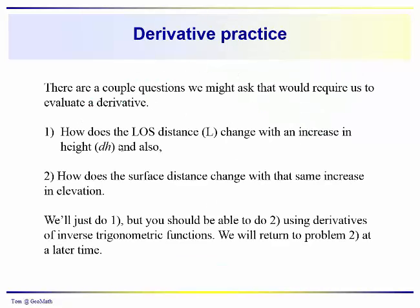We're going to deal with the first problem. How does the line of sight distance change with an increase in height dH? And then the second problem is how does the surface distance change with that same increase in elevation. So we're just going to do the first one because we haven't talked about derivatives of inverse trigonometric functions yet, but we'll do that in the next video.